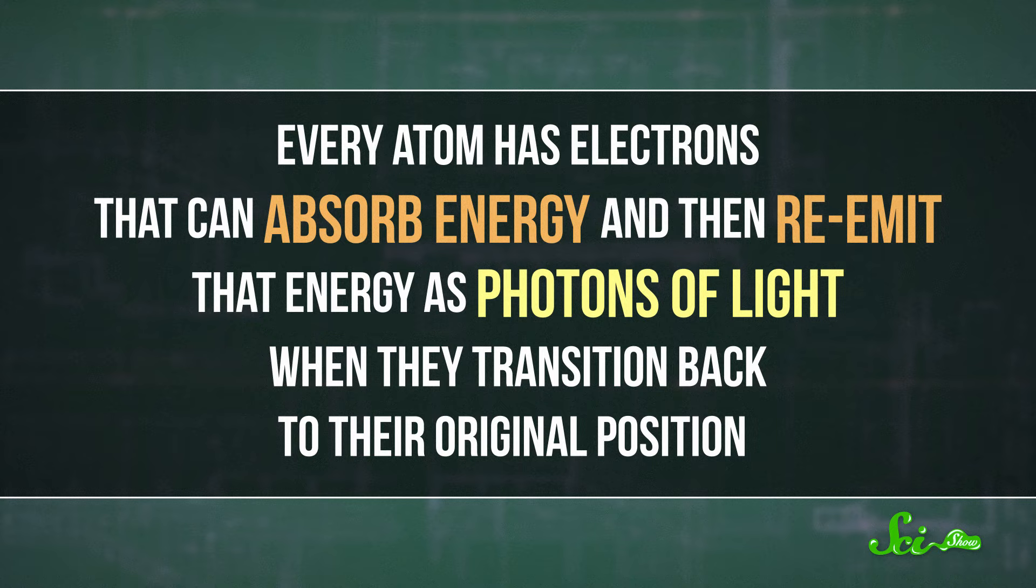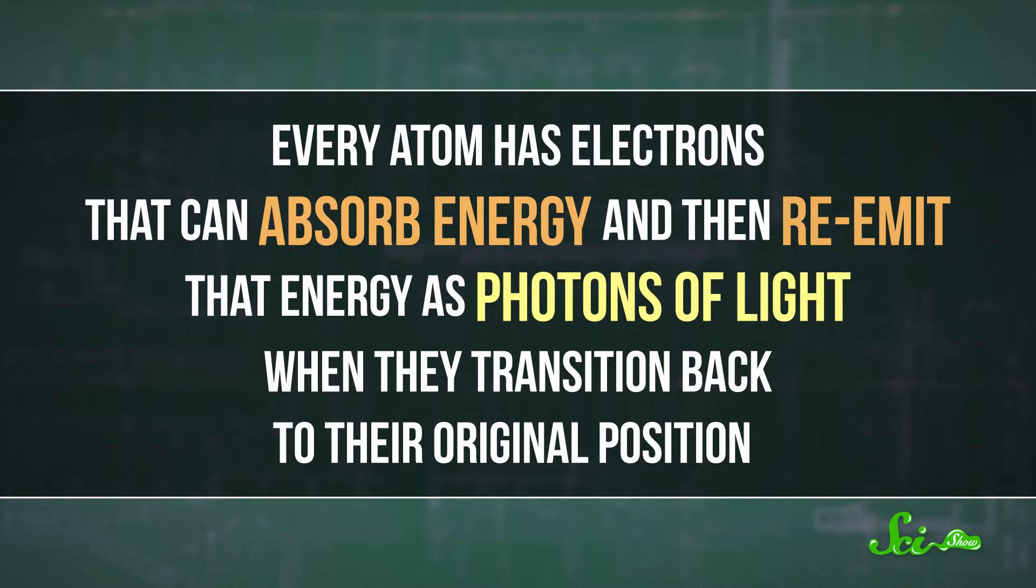Over time, some people suggested using wavelengths of light instead. They argued that light was much more fundamental because it exists throughout the universe. But light emitted from different sources has different wavelengths. Every atom, for example, has electrons that can absorb energy, and then re-emit that energy as photons of light when they transition back to their original position. So scientists looked at the emitted light from different elements, and tried to choose one that barely had any variation in wavelengths.